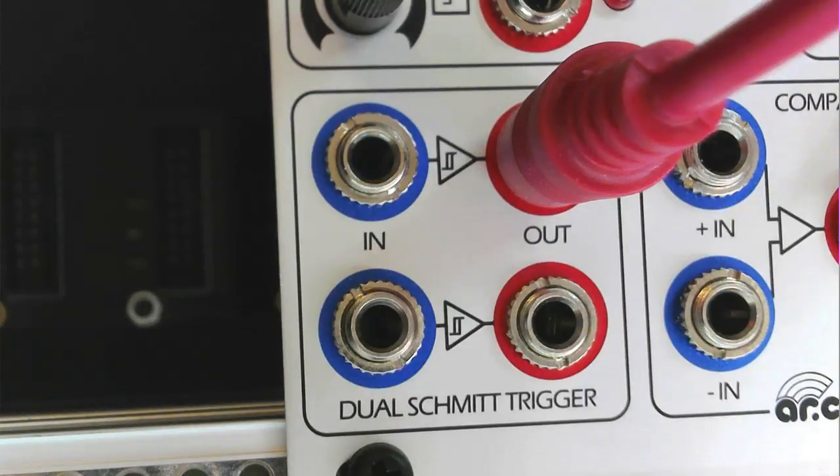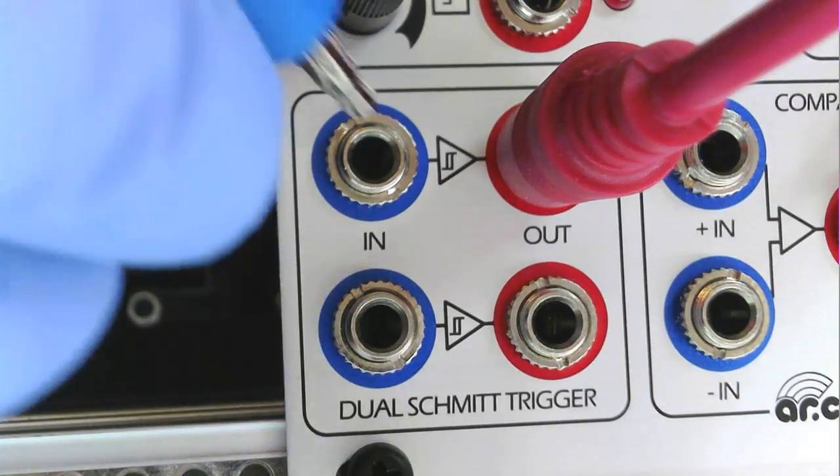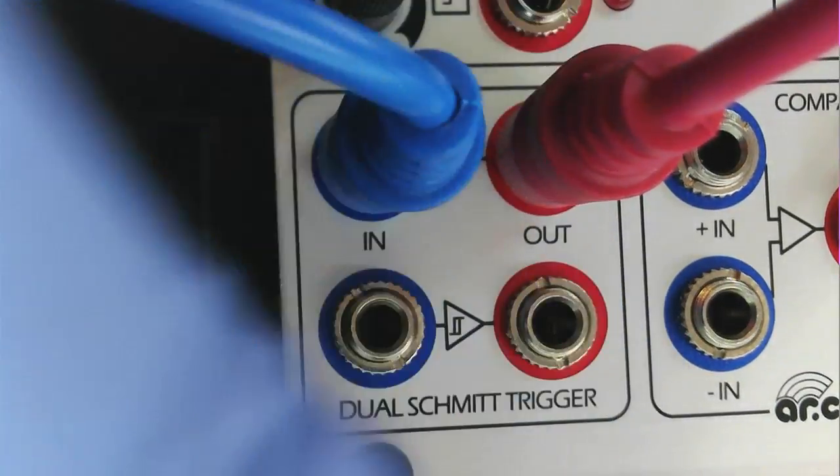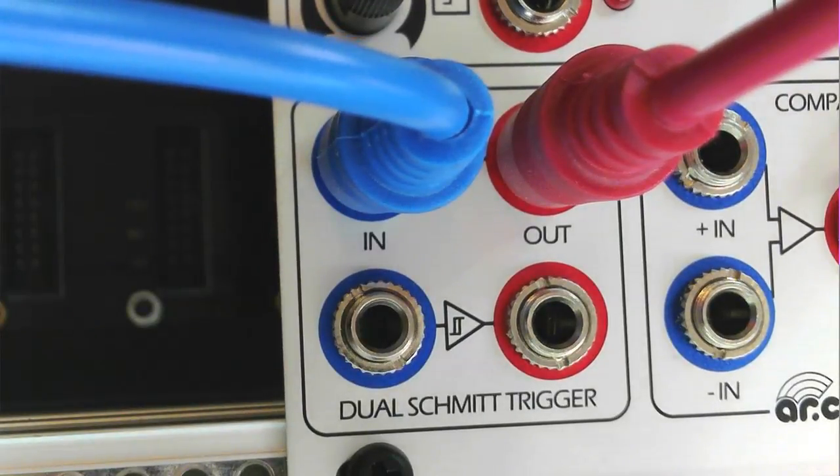In a modular synthesizer, a Schmitt Trigger can be useful for squaring up waveforms, extracting gates from audio or CV sources, or as a utility square wave generator.